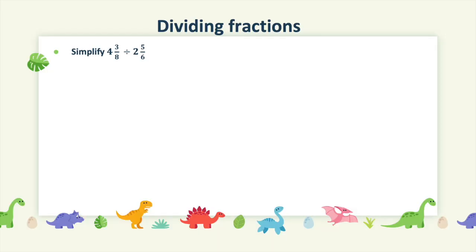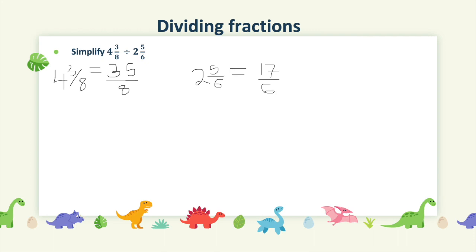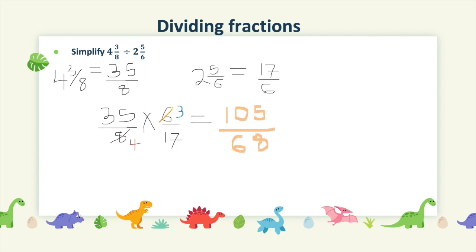Let's try one more. To solve this question, first you have to convert the mixed numbers to improper fractions. 4 whole 3 out of 8 becomes 35 over 8 by multiplying the denominator and the whole number, then adding the numerator — the denominator remains the same. I'll also convert the second fraction to an improper fraction, making it 17 out of 6. Once I've changed the mixed fractions to improper fractions, then I can flip and multiply. We reduce the fractions by cross-dividing, leaving us with 35 out of 4 times 3 over 17. When we multiply, our answer becomes 105 out of 68. Remember to always change your improper fractions to mixed fractions. Hence, our answer becomes 1 whole 37 out of 68.